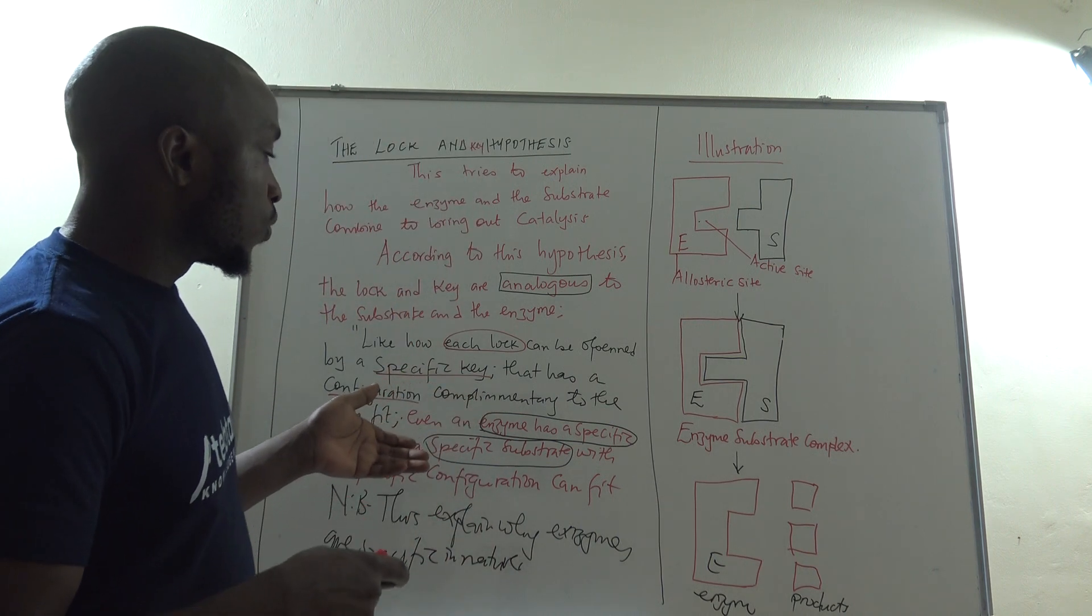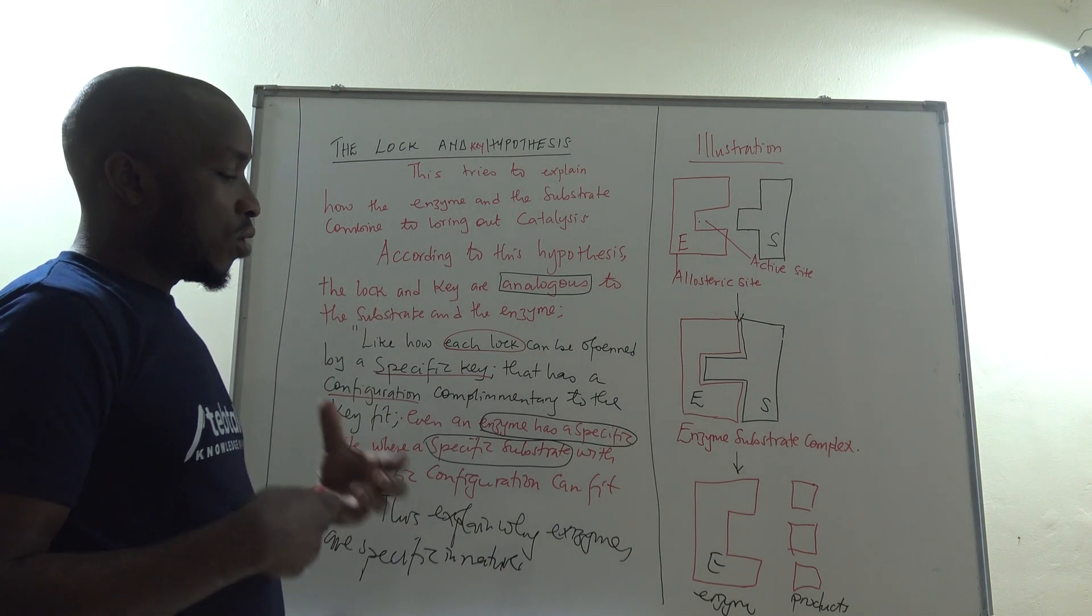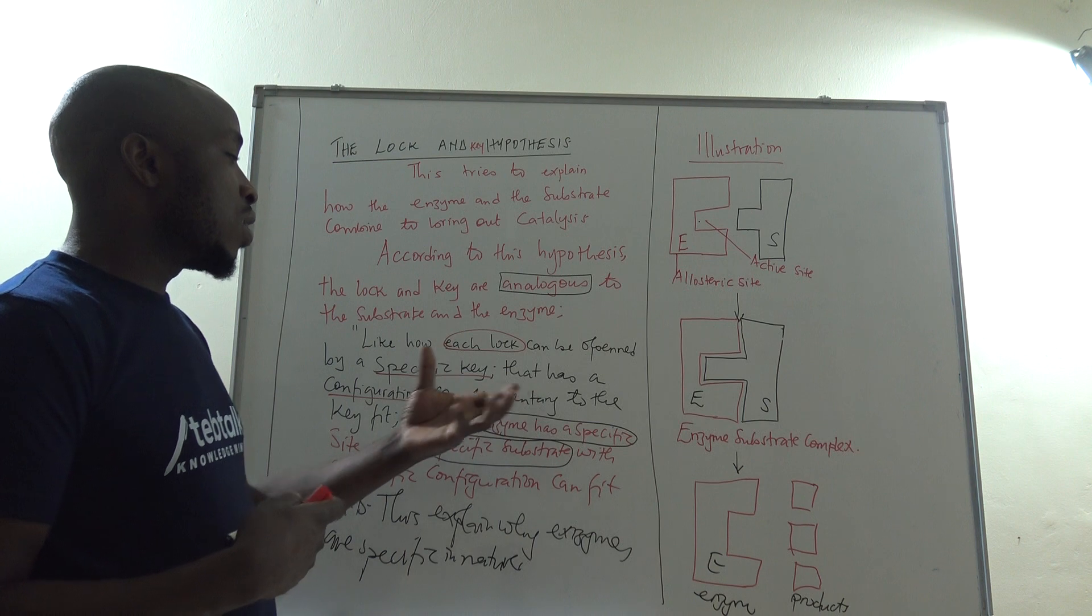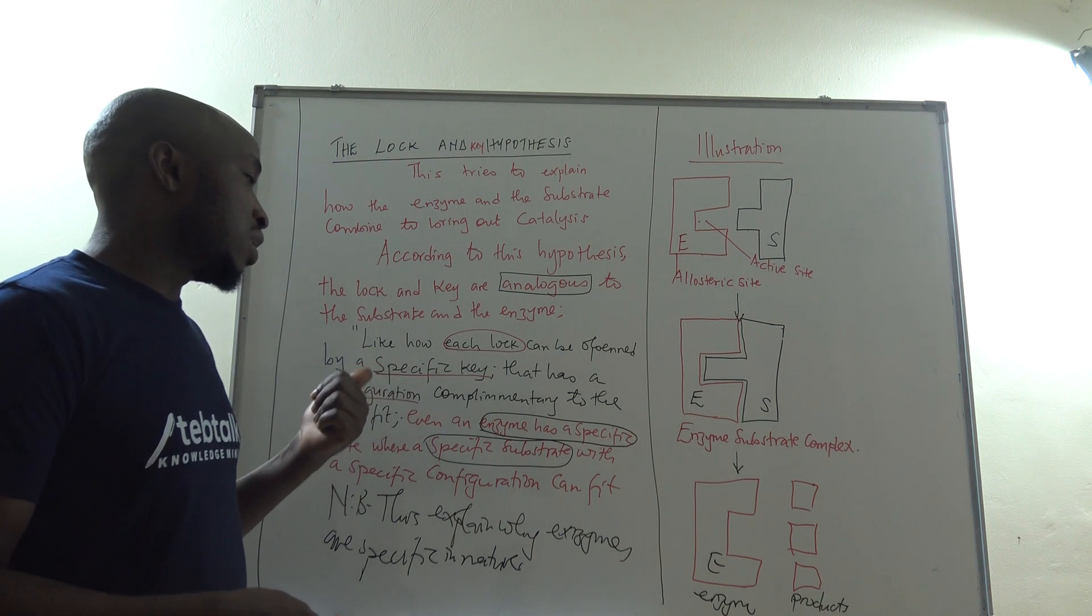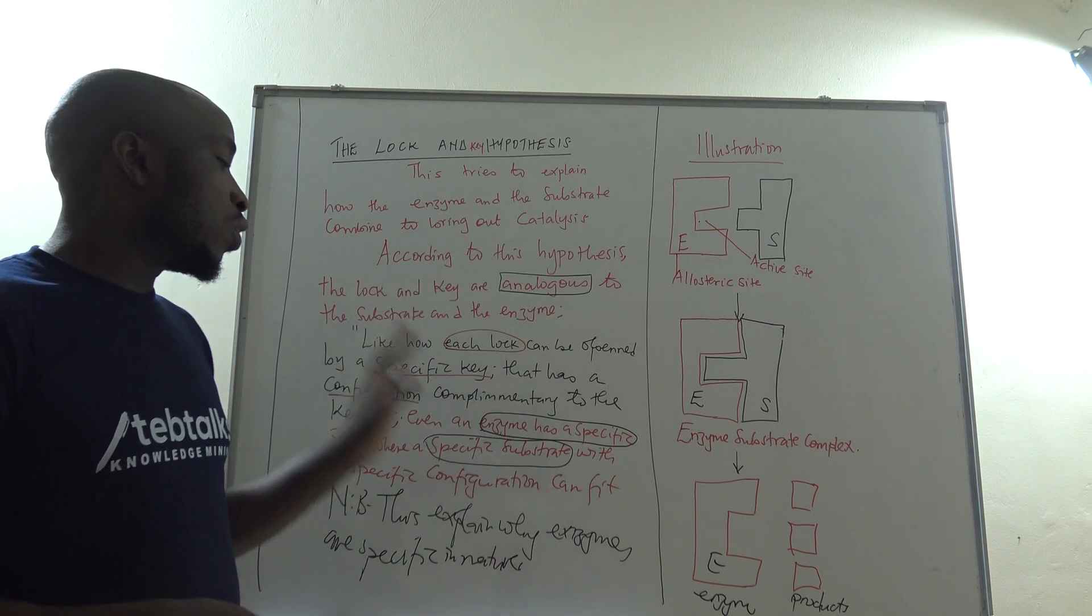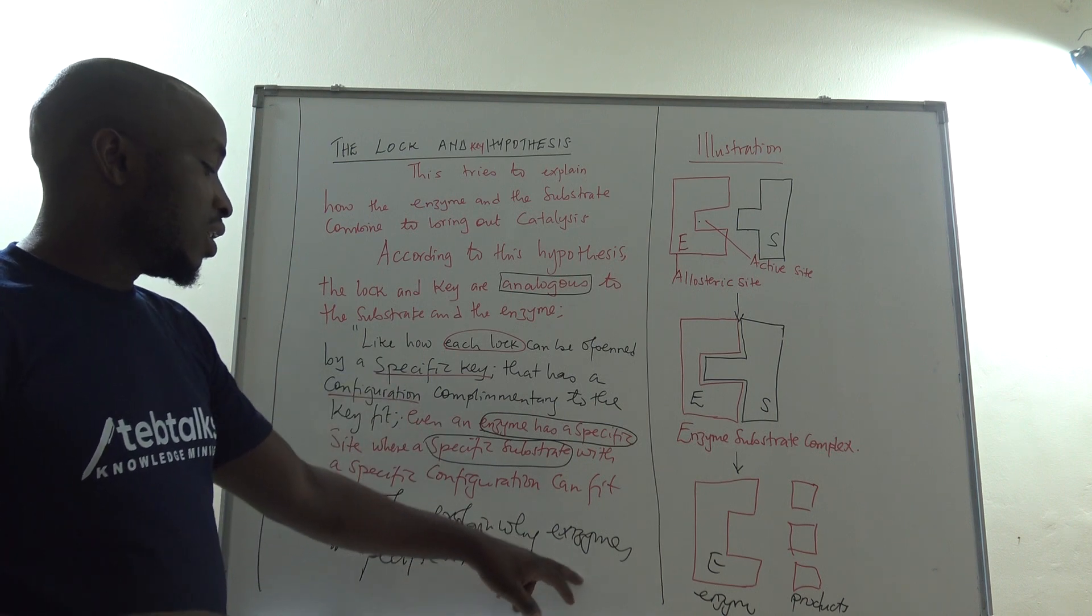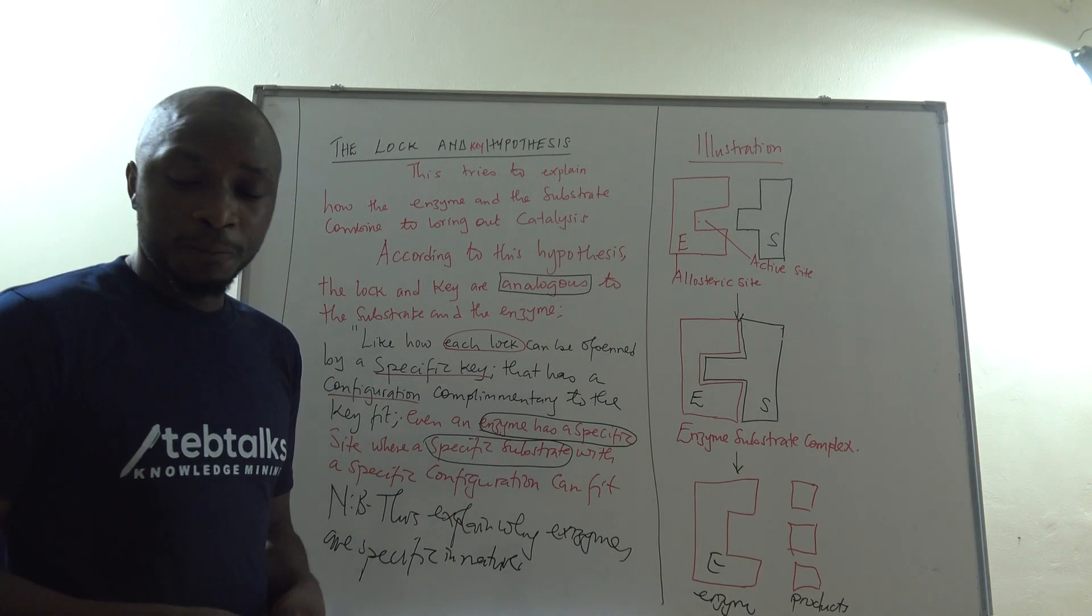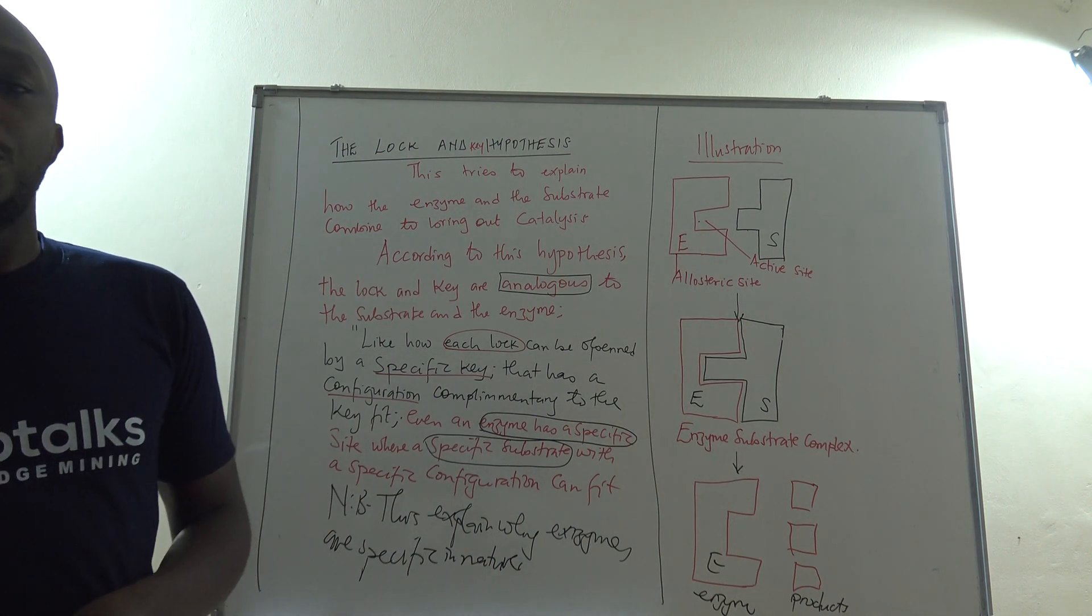So that is the lock and key hypothesis which tries to explain how the enzyme and the substrate interact. They interact like how a lock interacts with a key, each lock having a specific key that opens it. Likewise, an enzyme has a specific site, we call it the active site, where a certain substrate can fit. And it is helping us to explain why enzymes are specific in nature. So let's come back and look at the induced fit hypothesis.